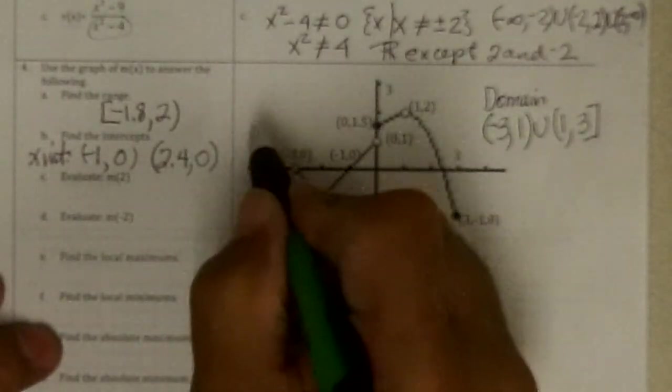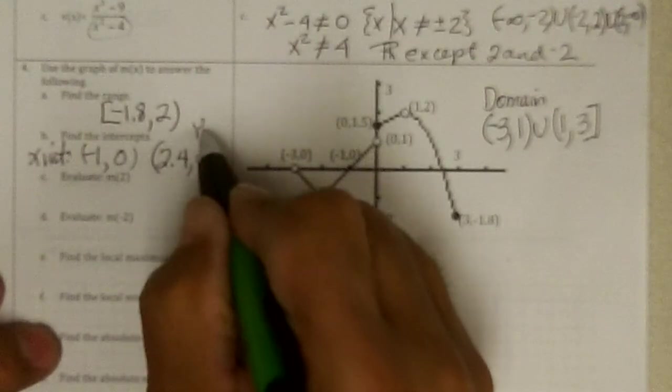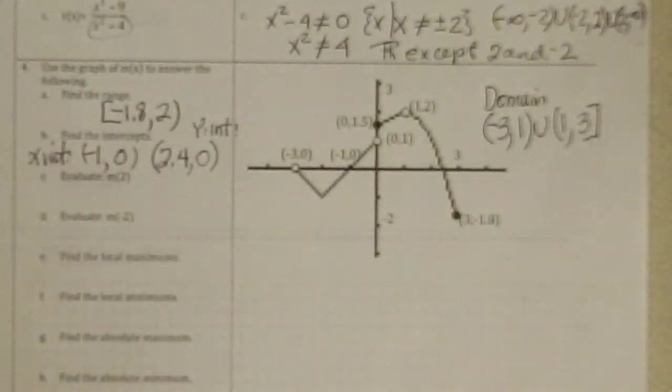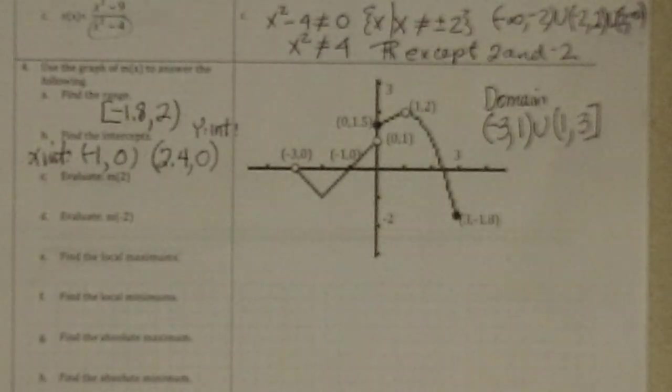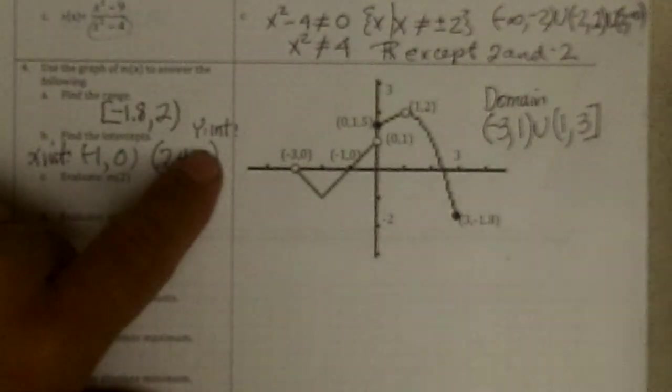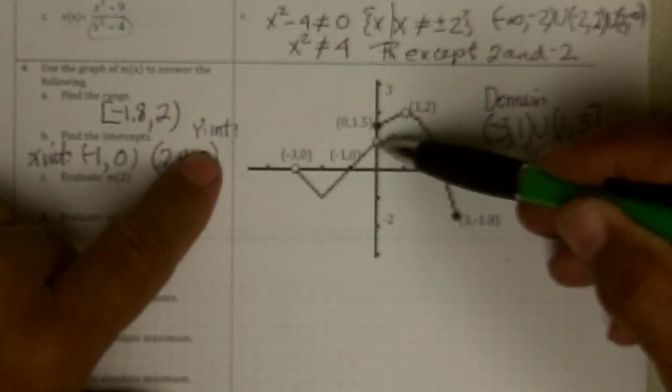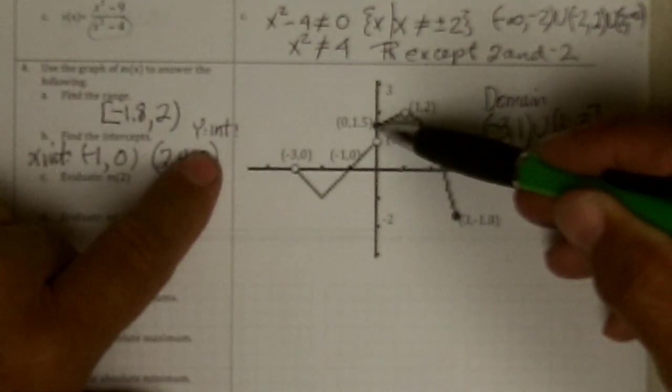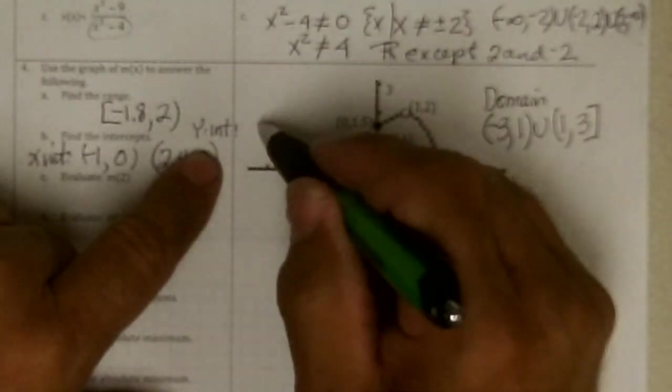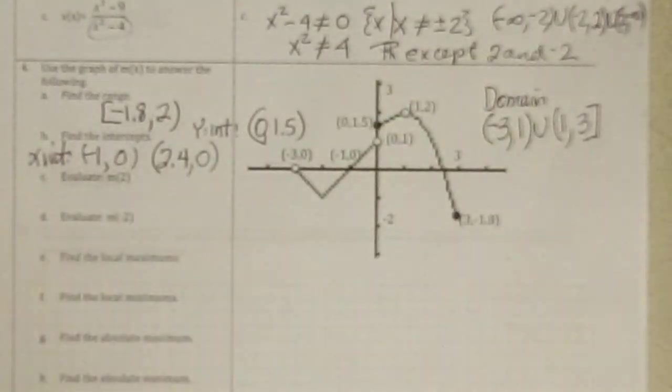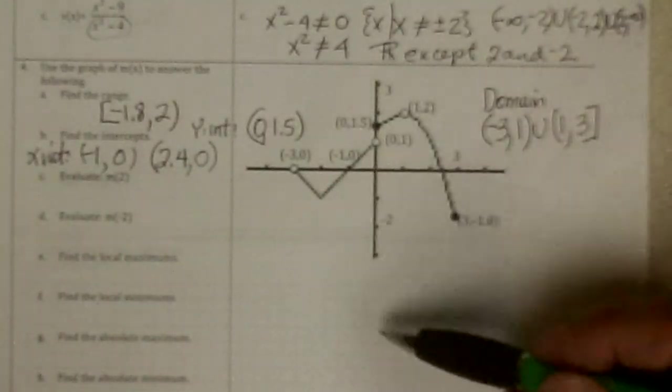Now, what about y-intercepts? So I'll do those up here. Y-intercept. I'll give you more room on the test. But sample test, I wanted to save some paper. Y-intercepts. So I'm going up the y-axis. Where does it hit? Well, it looks like it's going to hit there. But that's an open. So it's not. Keep going. And it hits there. Zero, 1.5. And that's the only place it hits the y-axis.